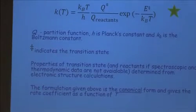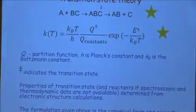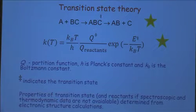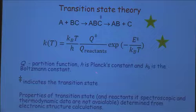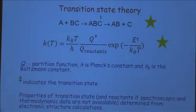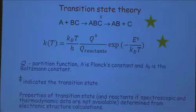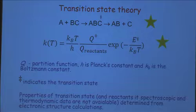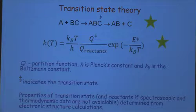This sort of expression applies to most of the reactions we're going to come across. The rate coefficient is equal to k_B T over h, where k_B is the Boltzmann constant and h is Planck's constant. Q‡ is the partition function for the transition state, and Q is the partition function for the reactants A plus BC. There should be a minus sign here: this is the exponential of minus the energy of the transition state E‡ divided by k_B T, where E‡ is in molecular units.